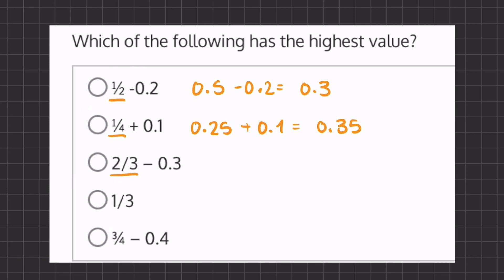Now, 2 thirds is equal to 0.66. It does go on for longer, but we'll stop after two decimals, and we'll subtract 0.3, and that will give us 0.36.